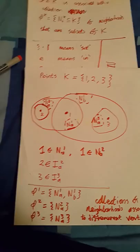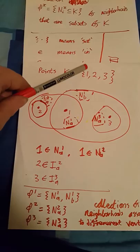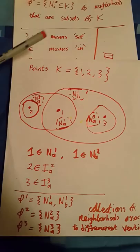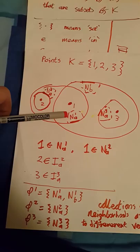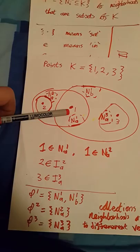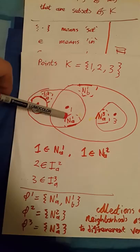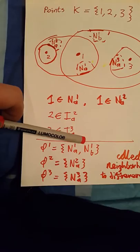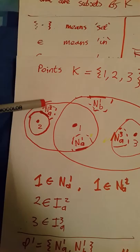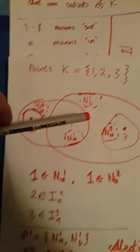We have a set of points K consisting of the points 1, 2, and 3, and we also have some neighborhoods. Looking at point number 1, the neighborhoods associated with it are N1A and N1B — those are the two neighborhoods of point 1. The collection of neighborhoods of point 1 consists of N1A and N1B. Similarly, point number 2 is in the neighborhood N2A, and point number 3 is in the neighborhood N3A.